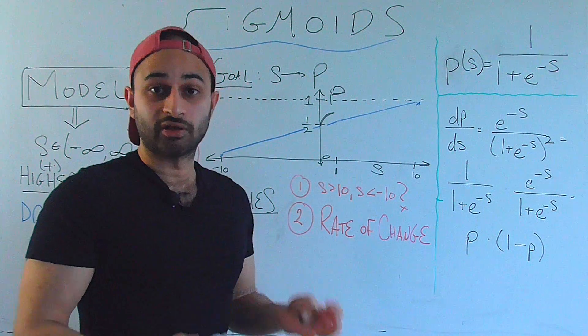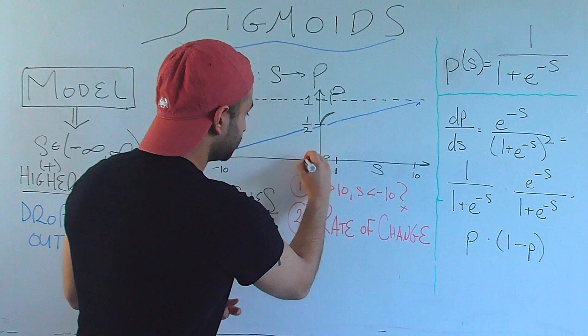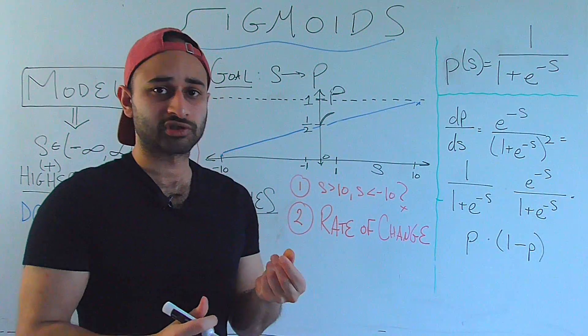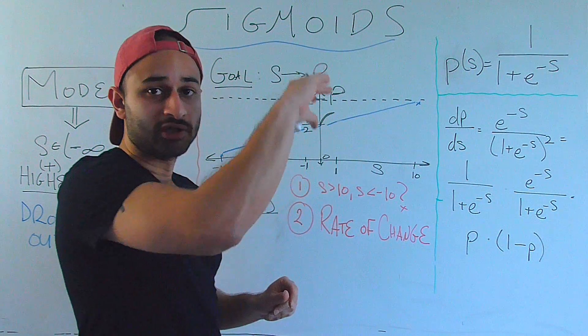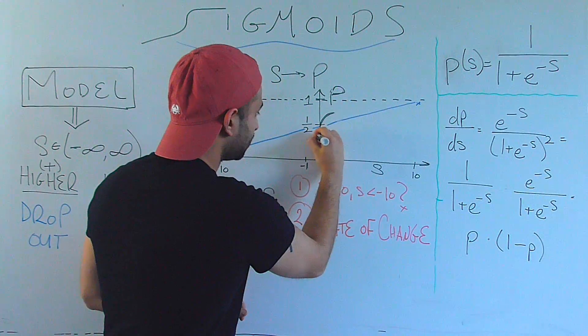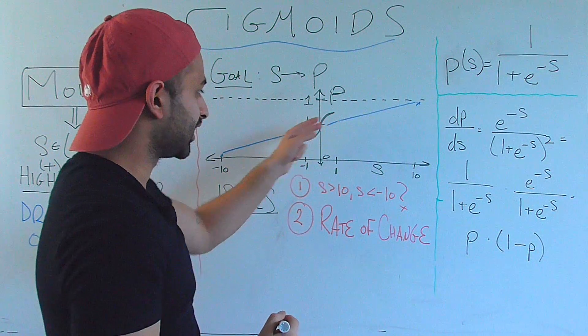And symmetrically in the other direction. If the score goes from 0 to negative 1, that's again a really huge change in relative terms. So we expect the probability to dip by a lot. So we want this kind of shape if that were to happen. So we see already linear functions not capturing that.